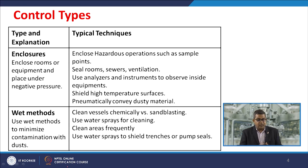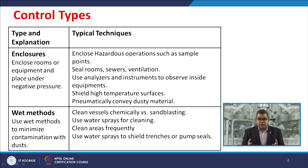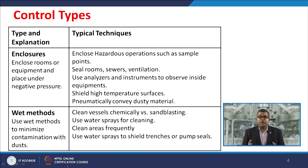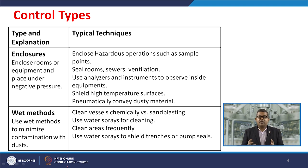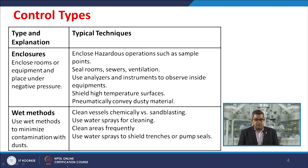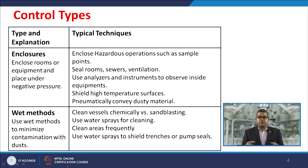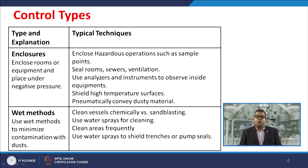Examples of enclosure include enclosed rooms or equipment placed under negative pressure. Typical techniques include enclosed hazardous operations such as sample points, sealed rooms, and sewer ventilation. You may use analyzers and instruments to observe inside equipment, shield high-temperature surfaces, pneumatically convey dusty materials. Wet methods minimize dust contamination — typical techniques include cleaning vessels chemically versus sandblasting, using water sprays for cleaning, frequent area cleaning, good housekeeping, and water sprays to shield trenches or pump seals.